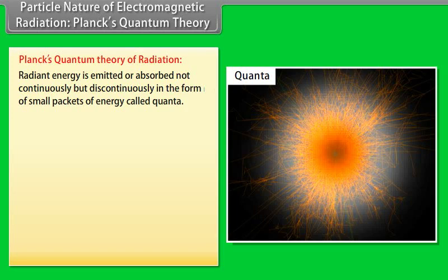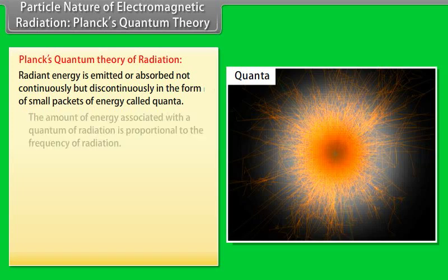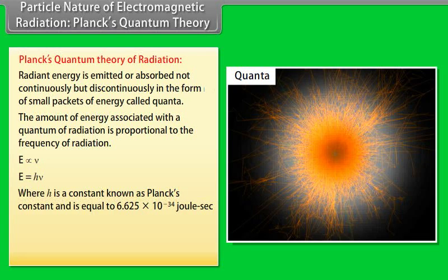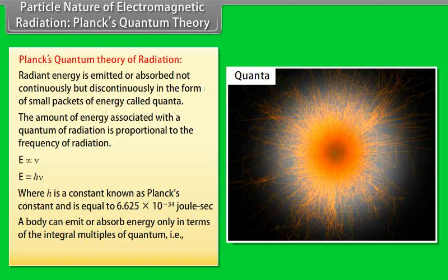Planck's Quantum Theory: Radiant energy is emitted or absorbed not continuously but discontinuously in small packets called quanta. The energy associated with a quantum is proportional to the frequency of radiation: E = hν, where h is Planck's constant equal to 6.625 × 10⁻³⁴ joule second. A body can emit or absorb energy only in integral multiples of a quantum: E = Nhν, where N = 1, 2, 3, 4, etc.